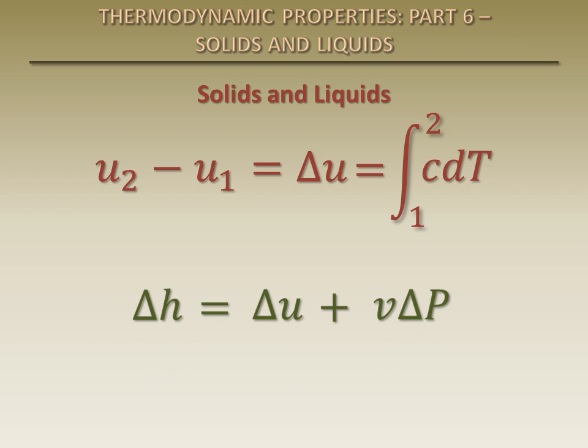So the change in specific enthalpy of incompressible substances is simply equal to the change in specific internal energy plus the product of the specific volume and the change in pressure during the process.